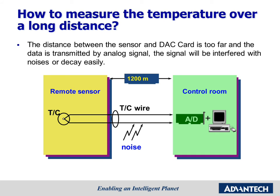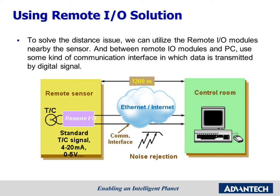As you can see, when we want to measure temperature over a long distance, the signal will be interfered with by noise or decay easily. This is because the analog signal has limitations in transmission distance, so it cannot avoid interference and attenuation. To solve the distance issue, we can place Remote I/O modules nearby the sensor, then use Ethernet or serial communication where data is transmitted as a digital signal to prevent signal decay and distortion. Besides, serial RS-485 uses differential signaling, and Ethernet has shielded cable — both interfaces have better anti-interference ability for data transmission.